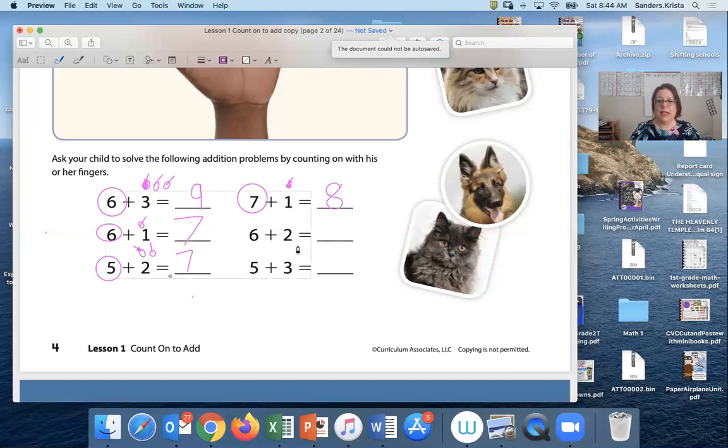6 and 2. 6 plus 2. Let's see. 6 is my greater number. So I'm gonna make two circles above the 2. We're gonna count on 6 plus 2. Put 6 here and 2 here. Ready? 6, 7, 8. What's my total of 6 plus 2?